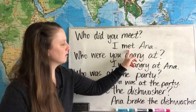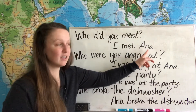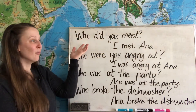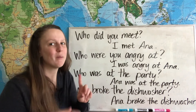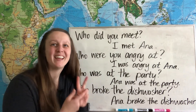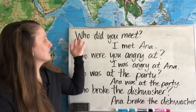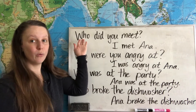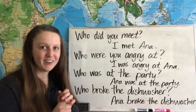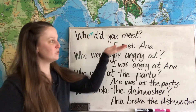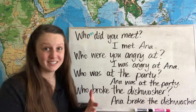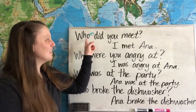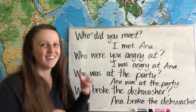I met Anna. Verb, subject, object. So because who replaces Anna, and Anna is the object of the sentence, we know that who is the object in the question. Maybe the first way works better for you, maybe the second — that's why I give two options. Because we know that who is the object, we can actually change it to whom: Whom did you meet? I met Anna. Honestly, when I'm speaking I'll still say who did you meet, but if you want to practice the difference, you would use whom in this case.